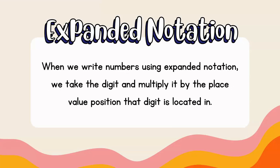When we write numbers using Expanded Notation, what we're going to do is we're going to take the digit — the number that you see — and we're going to multiply it by the place value position that that digit is located in, in that particular number.